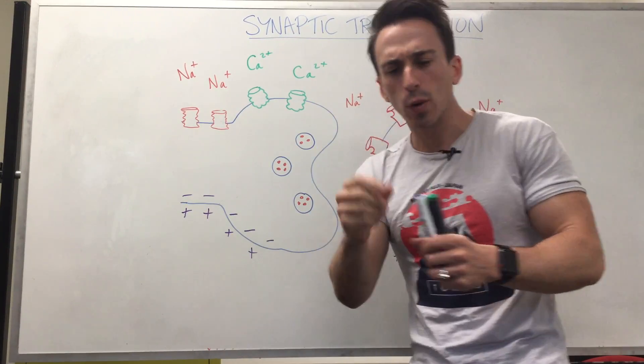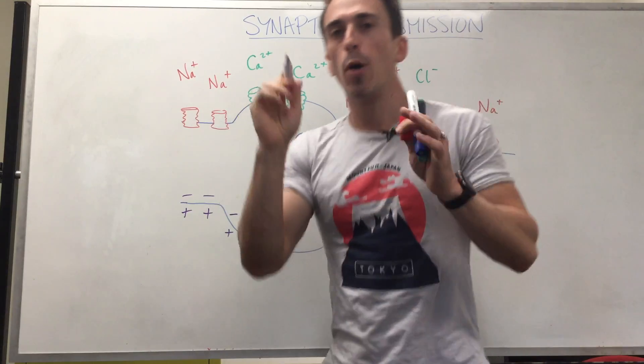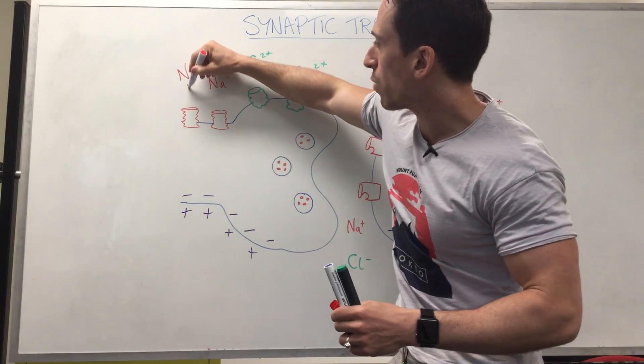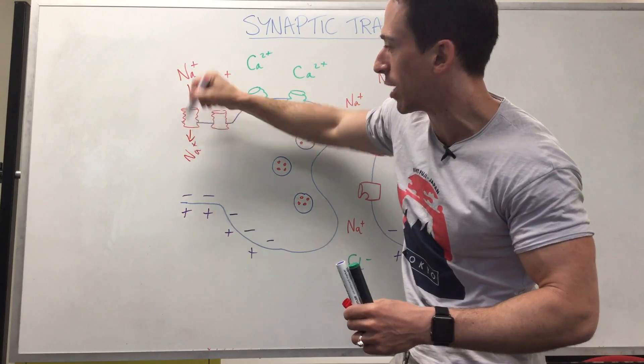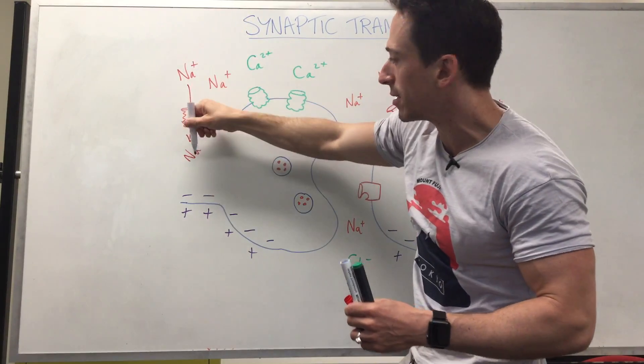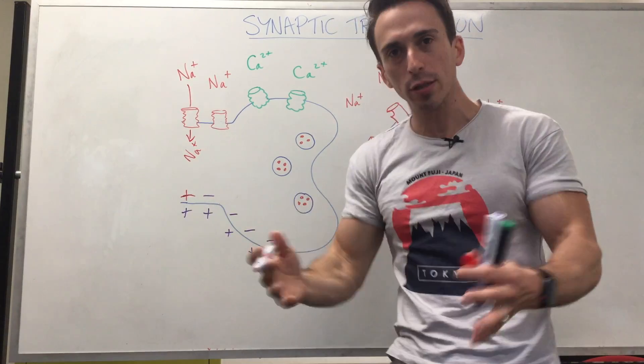So what's happened, just a very quick recap, is remember positive sodium was rushing into the cells via these voltage-gated sodium channels. When the positive sodium enters the neuron, it makes that area of the neuron positive.